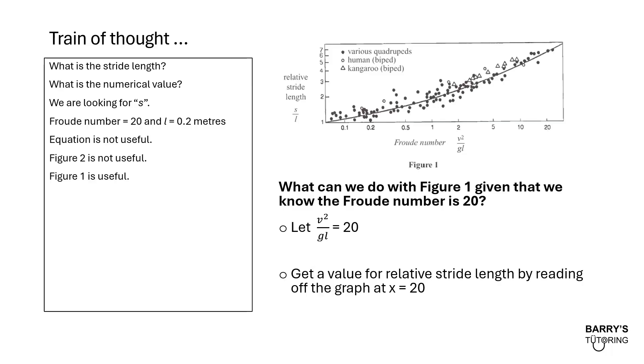What can we do with figure 1 given that we know the Froude number is 20? There's a few things we could do. We could let V squared over GL equals to 20. Or we could try to get a value for the relative stride length by reading off the graph at x equals to 20. What do you guys think? We've got two options here. Which one is the best path? Let's get a value for the relative stride length by reading off the graph at x equals to 20 or Froude number of 20. Not only is reading off the graph easier, but it's going to get us closer to the answer. Because remember, we're looking for S. So reading off the relative stride length might be useful. That's related to S. If we substitute it into the equation V squared over GL is equal to 20, which is the definition of the Froude number, we're not going to be able to solve for S.